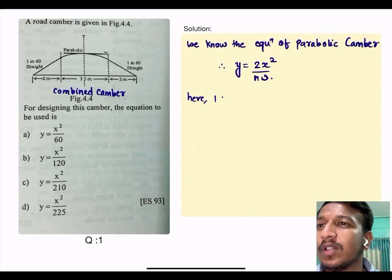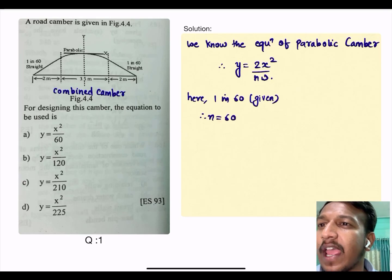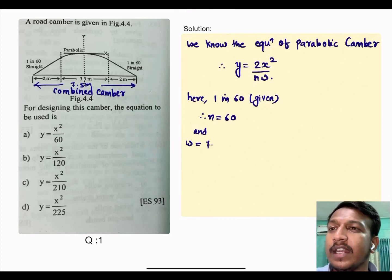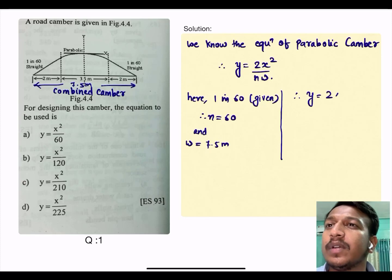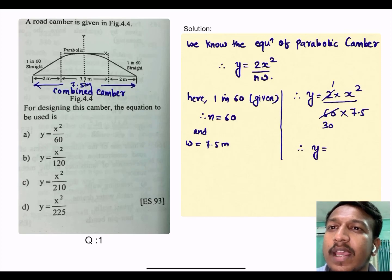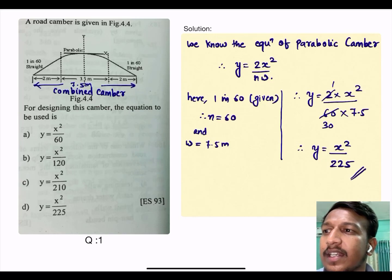The question from ESE 93, also in Gupta and Gupta. We know that equation of parabolic camber is 2x² divided by nw. Therefore y equals 2x² divided by nw. We should know the value of n. 1 in 60 is given, therefore n equals 60. And width of the road is 3.5 plus 2 plus 2, that is 7.5 meter. Therefore w equals 7.5 meter. Substituting, y equals 2x² divided by 60 into 7.5, which is 1 by 30 into 7.5. Therefore y equals x² divided by 225, which is option D.